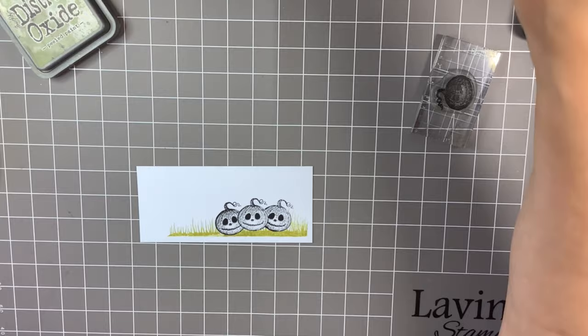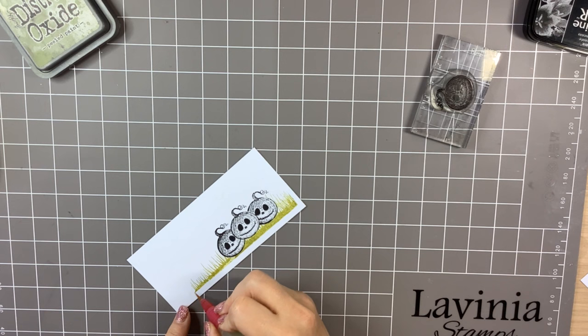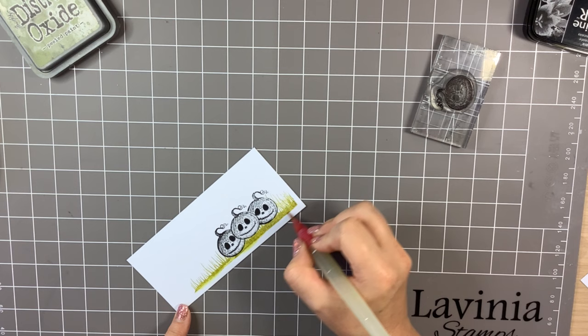So I'm going to come in with a little bit of water on my brush. I'm also going to have a bit of kitchen roll on hand in case I make it too wet. I just want to soften the bottom line just with a wet brush.